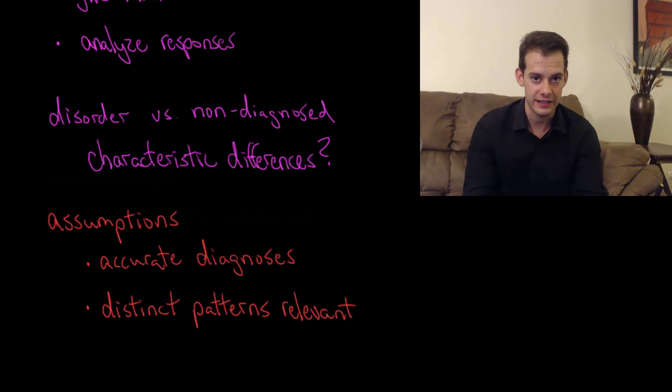Another assumption is that any of the patterns we find are actually relevant to depression. They might not actually be relevant to the diagnosis of depression; they could be related to something else and just happen to occur between these two groups. Those are two important assumptions to keep in mind when thinking about analyzing the pattern of responses from the MMPI.